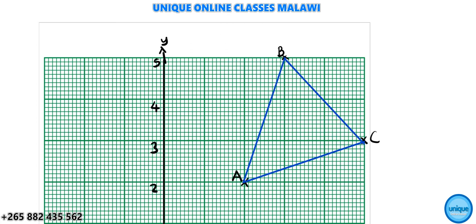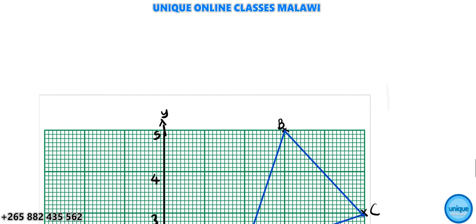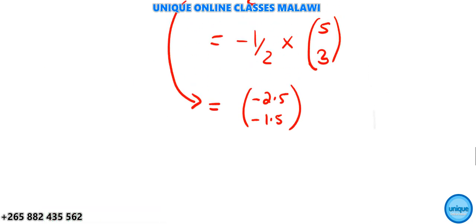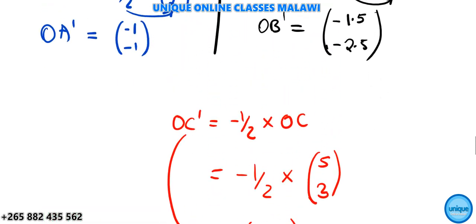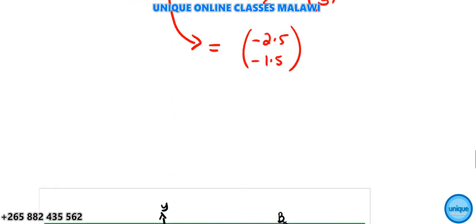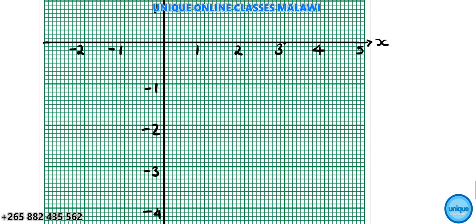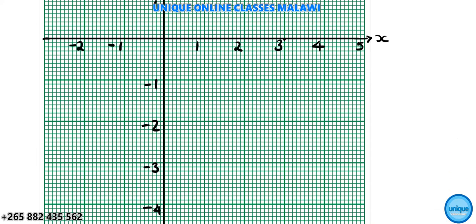Now we draw the image triangle using the new coordinates. We have A' at negative 1 comma 1 — wait, that is (-1, -1) — so we plot A' at (-1, -1) on the graph.